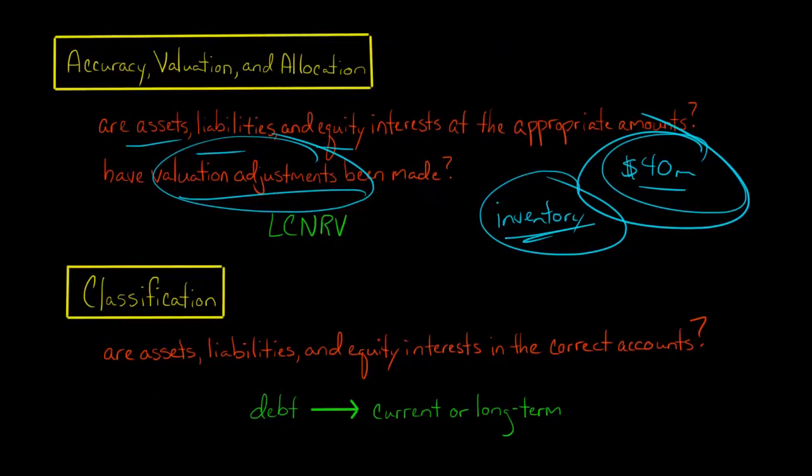So classification, we look at these assets, the liabilities, the equity accounts, have they been put in the correct account? For example, a simple example is if we just look at debt. Let's say the company owes money to a lender. And we want to know, is this going to be a current liability? Or is it going to be a long term liability?